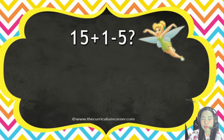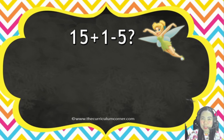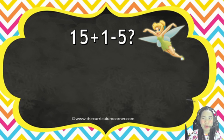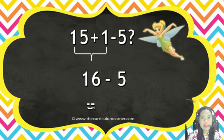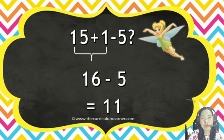We have here 15 plus 1 minus 5. Our expression involves addition and subtraction only, so we should do them from left to right. Starting from the left, 15 plus 1 equals 16, then minus 5, the answer is 11. Again, if our expression involves addition and subtraction only, we should do them from left to right.